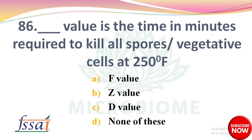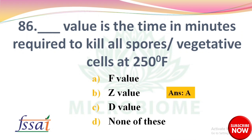DASH is the time in minutes required to kill all spores or vegetative cells at 250°F. Options: A) F-value, B) Z-value, C) D-value, D) None of these. The right answer is option A: F-value.